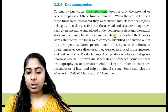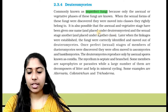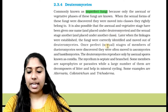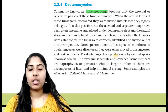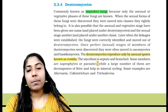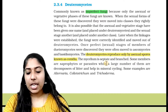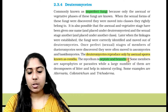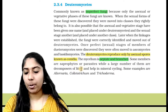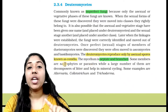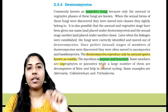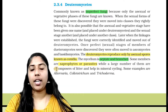Once perfect stages of members of Deuteromycetes were discovered, they were often moved into Ascomycetes and Basidiomycetes. Deuteromycetes reproduce only by asexual spores known as conidia. The mycelium is septate and branched. Some members are saprophytes or parasites, while a large number are decomposers.